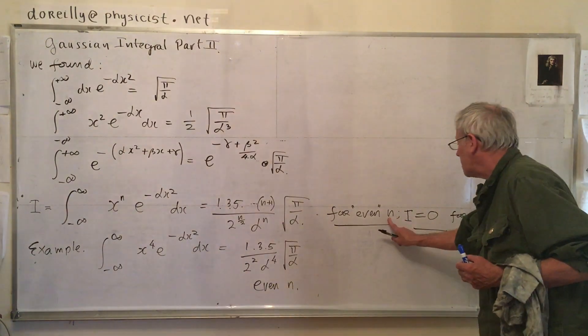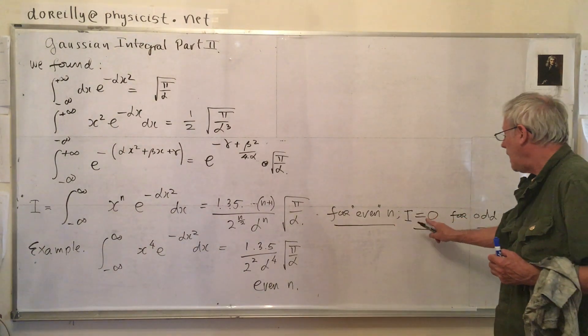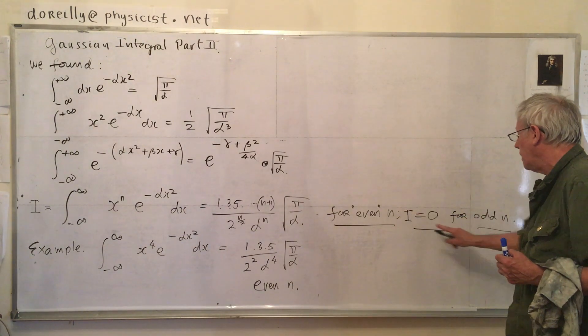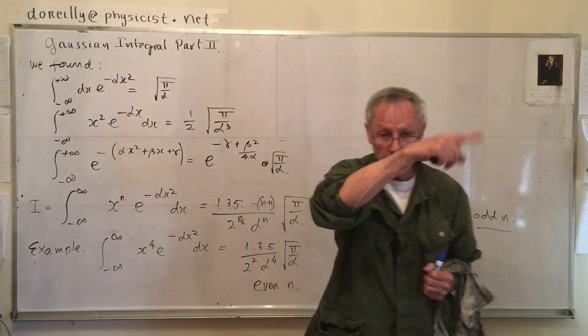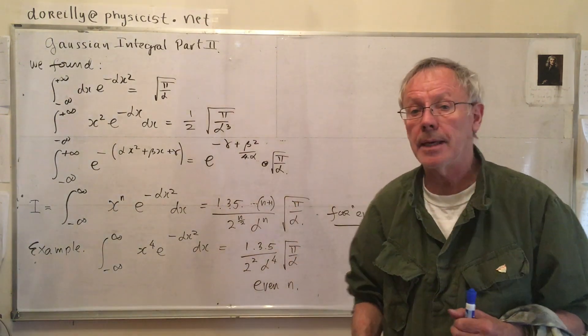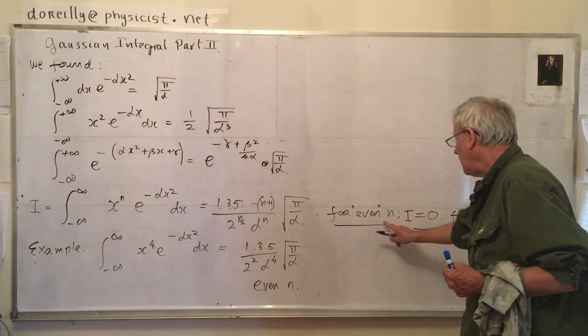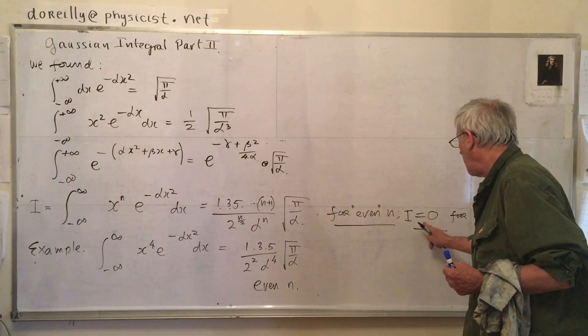So, when n is not even, in other words, when n is odd, for odd n, this whole integral vanishes. You can just look at the graph of the integrals to see why that's the case. Okay, so for even n, that's the case, and for odd n, it's zero.